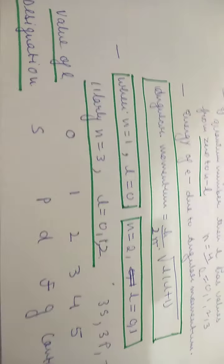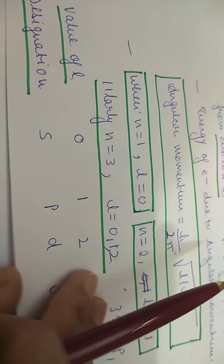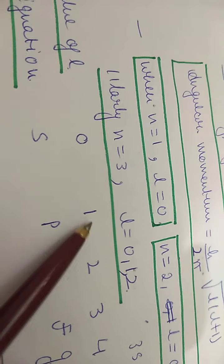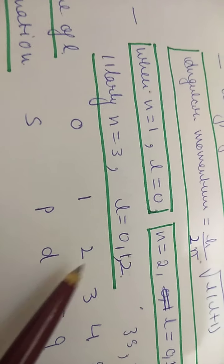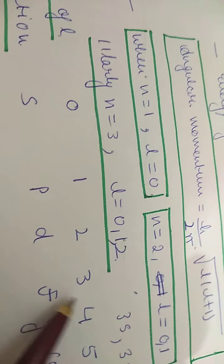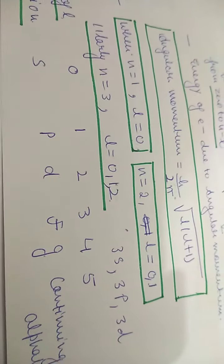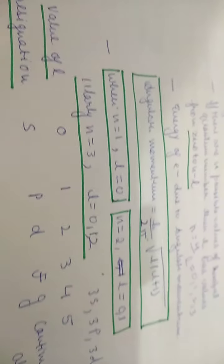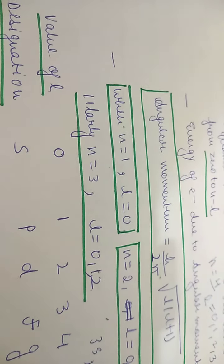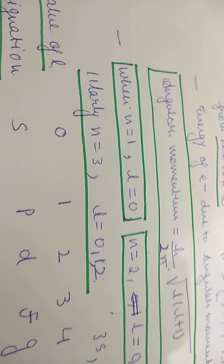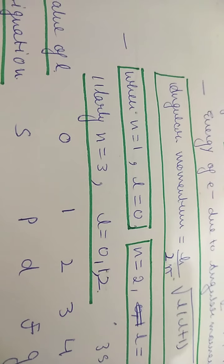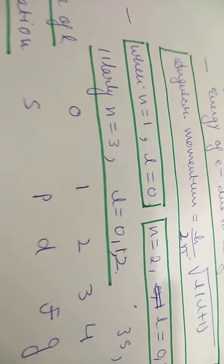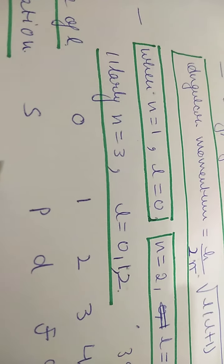From the value of L, we can determine the sub-shell designation: L = 0 corresponds to S (sharp), L = 1 corresponds to P (principle), L = 2 corresponds to D (diffused), and L = 3 corresponds to F (fundamental). Beyond F, the designations continue alphabetically (G, etc.), though we rarely go that far.